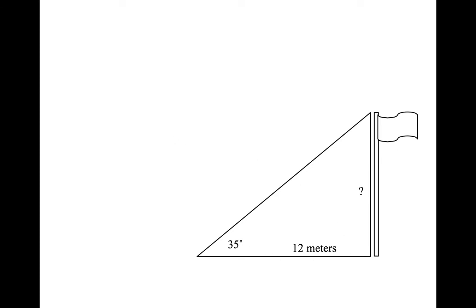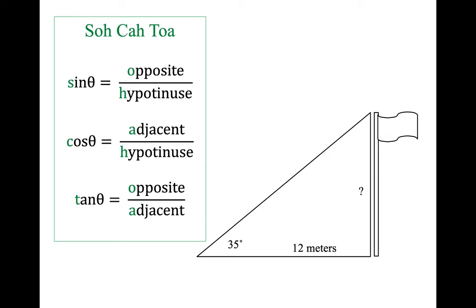Let's get started. I'll do a couple of problems from your review, and then the rest will be for you. All you really need to know to be able to do this is SOH CAH TOA. SOH is sine of the angle theta, equal to the opposite over the hypotenuse. Cosine of theta is equal to adjacent over hypotenuse, and tangent of theta is equal to opposite over adjacent.